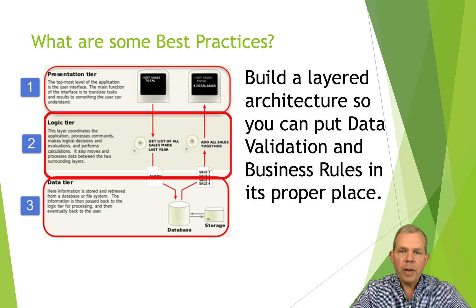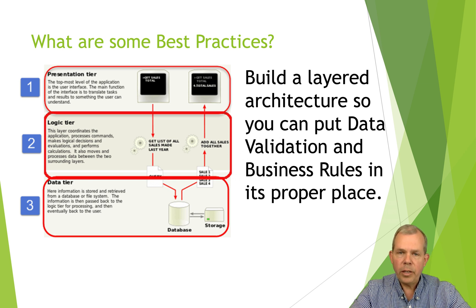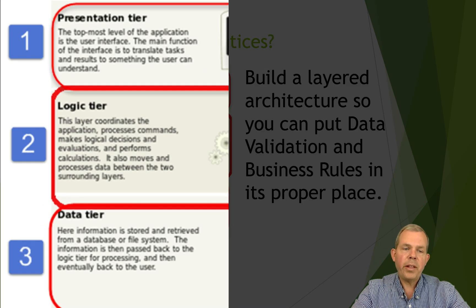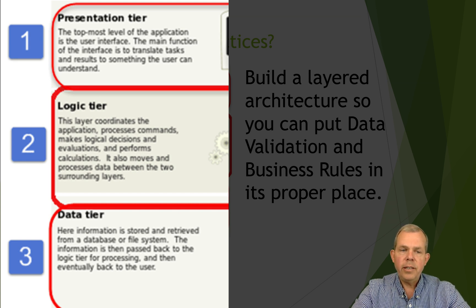Here are some best practices for when and where you should do your data validation. Build your application with a plan and use an n-tiered approach. Architecting your program is the best way to find a good spot where data validation can occur. At the top is the presentation layer — like JavaScript validation. The logic layer in the middle is where you should be thinking about your data validation rules. And at the data layer at the bottom, if you can rely on level two to be accurate, then level three will work better.